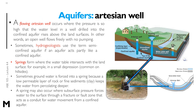An artesian well is a flowing artesian well where the pressure is so high that the water level in a well drilled into the confined aquifer rises above the land surface. In other words, an open well flows freely with no pumping. An artesian well brings groundwater to the surface under natural pressure without any pumping, because it is under pressure within a body of rocks or sediments called an aquifer. Sometimes hydrologists use the term semi-confined aquifer when an aquifer acts partly like a confined aquifer.